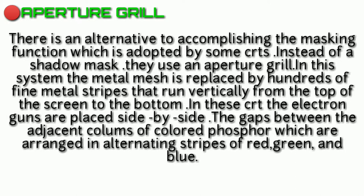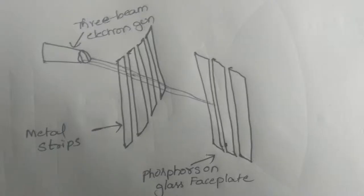So CRT is cathode ray tube. This aperture grill - we use a metal mesh in the shadow mask. So this aperture grill, this metal mesh will be replaced by hundreds of fine metal stripes.